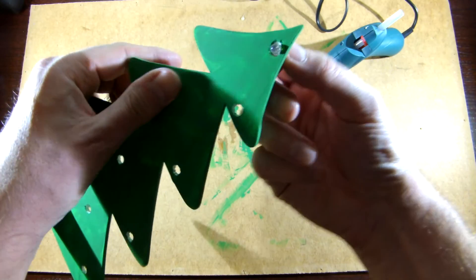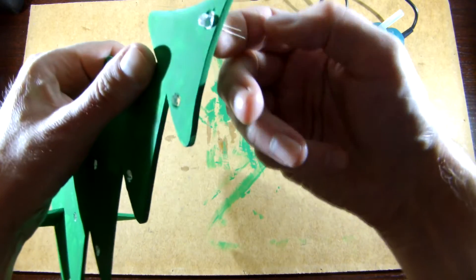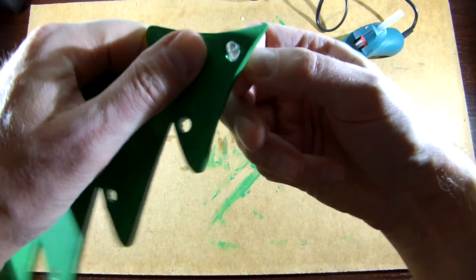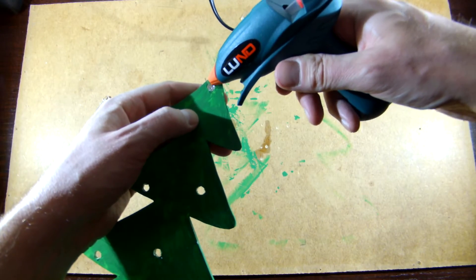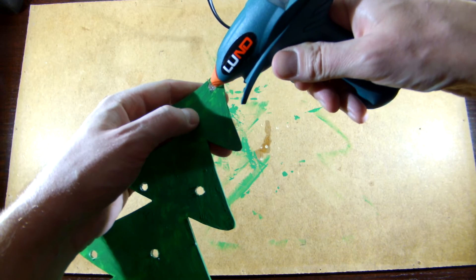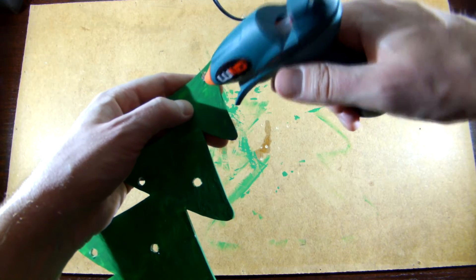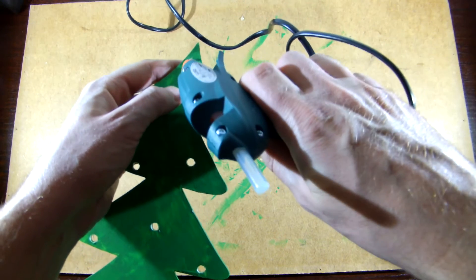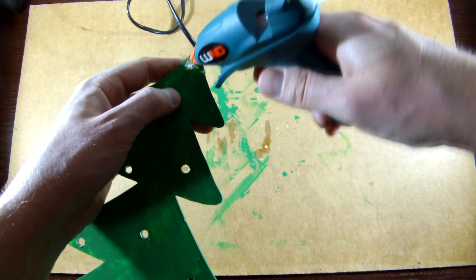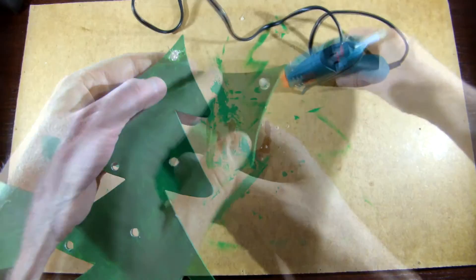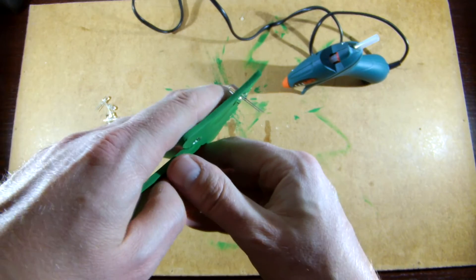Push the LEDs through the holes and hot glue them in place. The LEDs should stick out quite a bit.